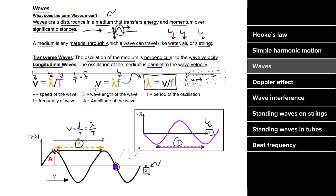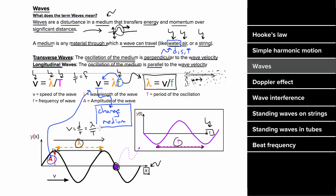The only way to change the speed of a wave is to change the properties of the medium itself. For example, the only way to change the speed of waves on water is to change something about the water — its density, salinity, or temperature. Changing frequency won't change the speed of the wave, and neither will changing the amplitude.